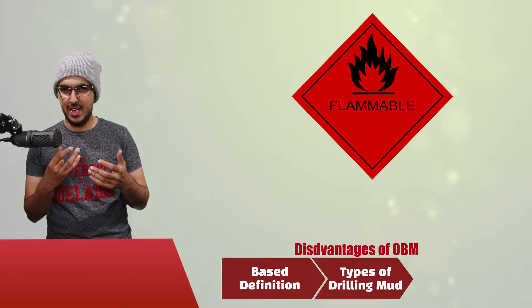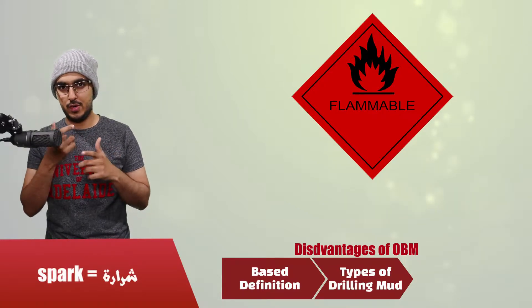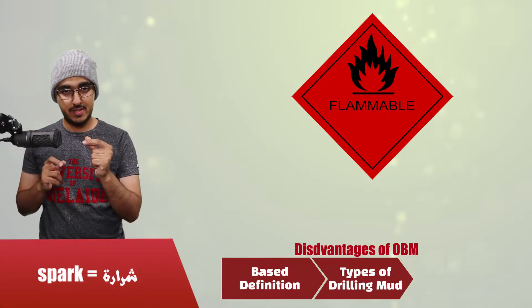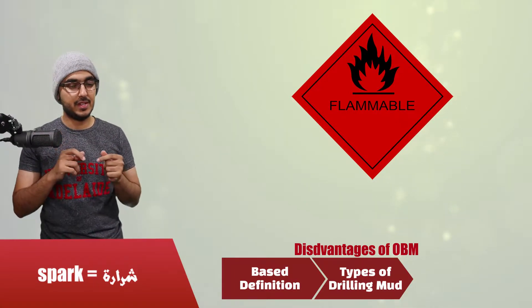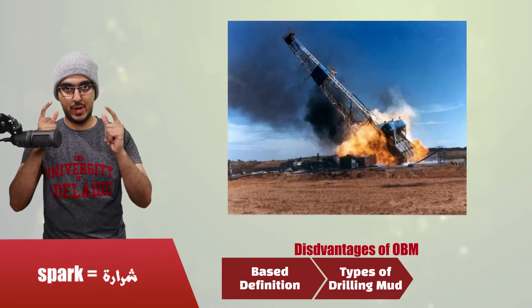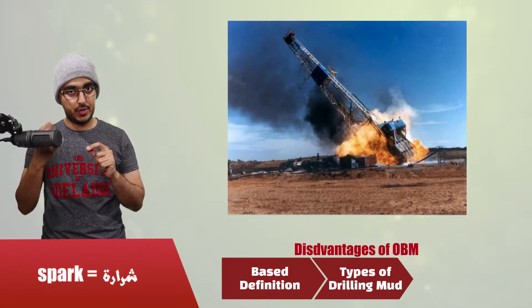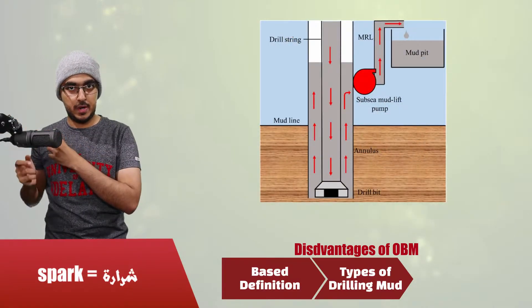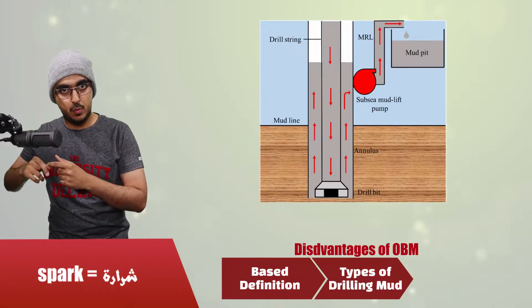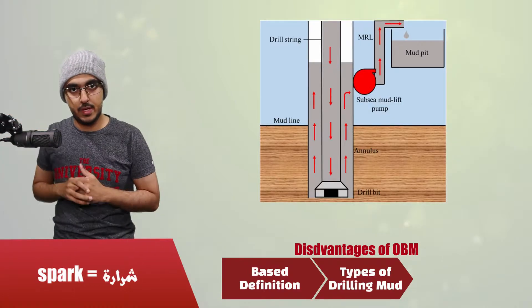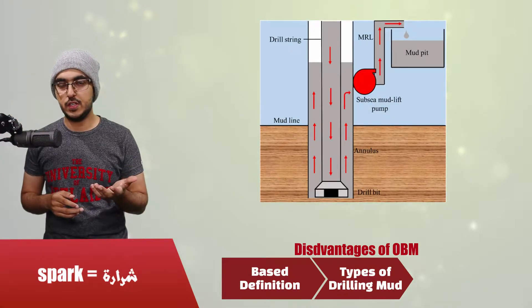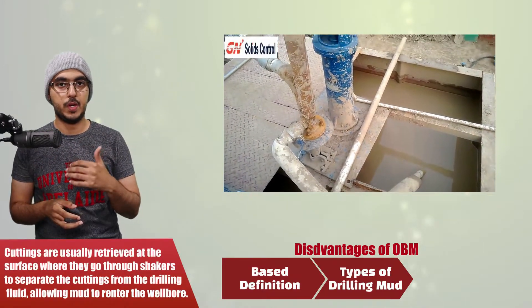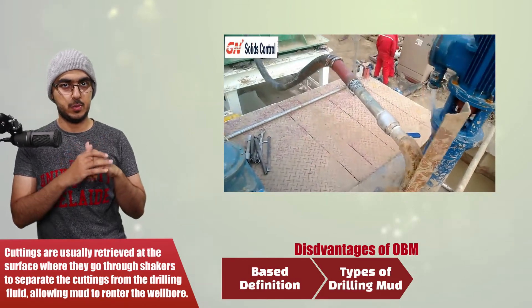So if you have a kick into the formation and there are some sparks between your drill bit and your rocks, a spark from the drill bit can cause a blowout, because not only is your kick flammable, your whole mud system is flammable. So a spark at the bottom will cause a blowout at the surface. Another disadvantage is that removing oil-based muds from cuttings at the surface is much harder when you compare it to removing water-based muds.